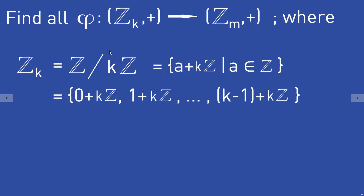Our task is now to find all group homomorphisms from the residual class group Z_K to the residual class group Z_M, where K and M are natural numbers. We are looking for all group homomorphisms phi from this group to this group.